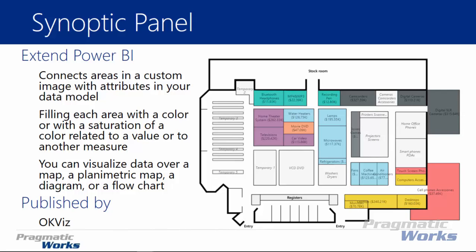Big kudos to the team at OKViz who designed this — they're also the folks that run SQLBI.com. Once you get a map file downloaded from their website, you can use it to fill in different areas with different color saturations, or use it almost like a KPI with different indicators or statuses. You can use any image: a map, a diagram, a flowchart — really anything where you can outline areas and apply data to them.